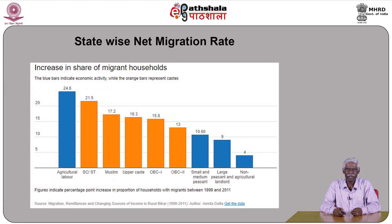The diagrammatic presentation shows the percentage point increase in the proportion of households with migrants between 1999 and 2011. The diagram depicts the increase in share of migrant households with respect to variables like agricultural labor patterns, various population groups, religious groups, small and medium peasants, large peasants and landlords, and the non-agriculture category. The data clearly shows that migration is dominated by agricultural laborers, among whom the share of income from remittances is at a higher level.